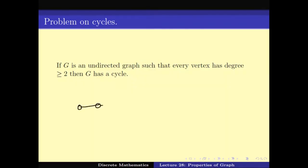Note that we can have a graph where every vertex except the first and last has degree exactly 2, and yet it does not have a cycle — like a path graph. So we truly require that every vertex has degree greater than or equal to 2.